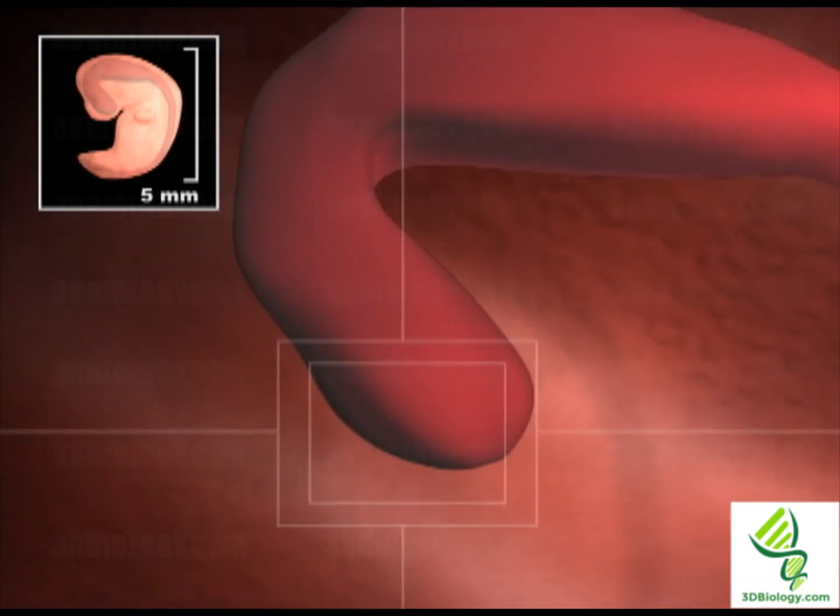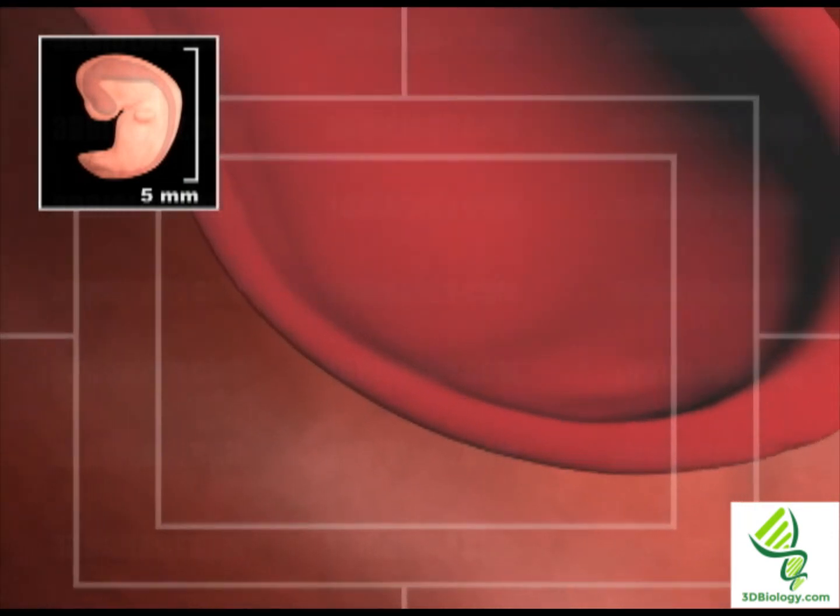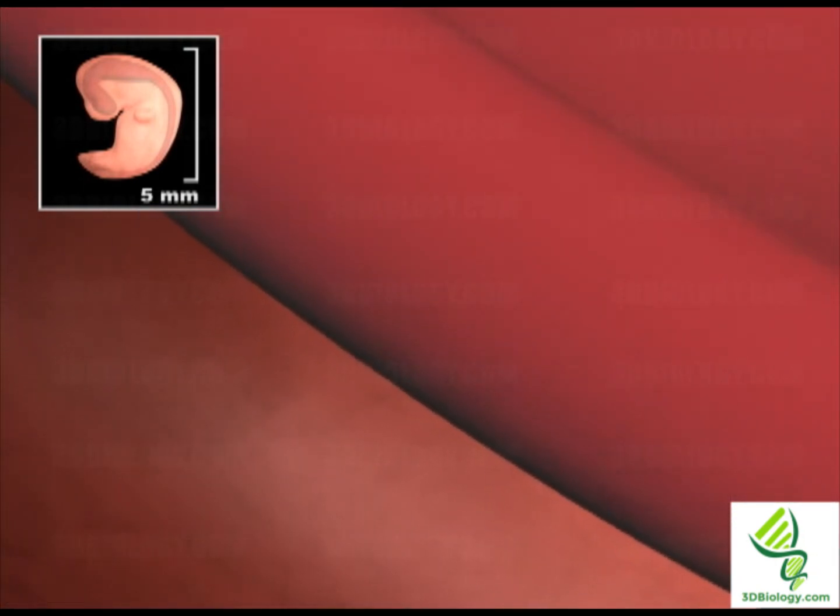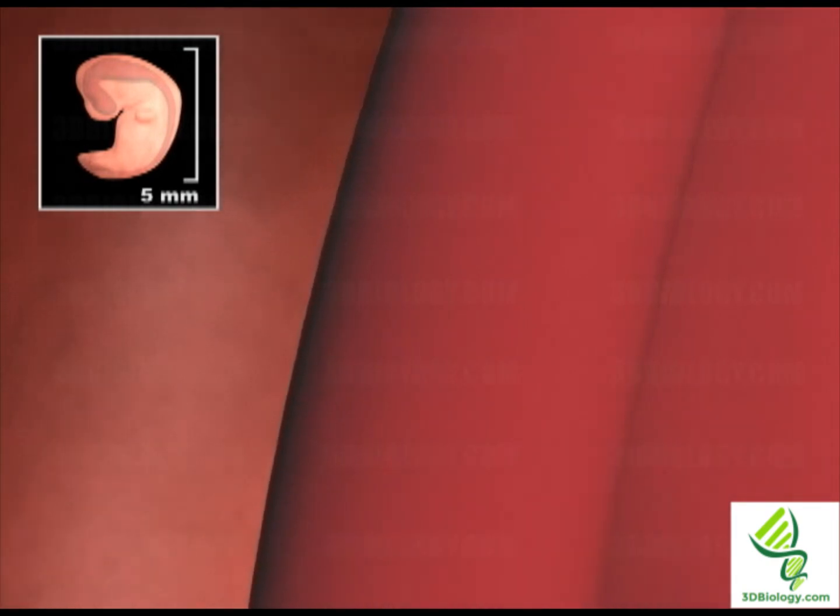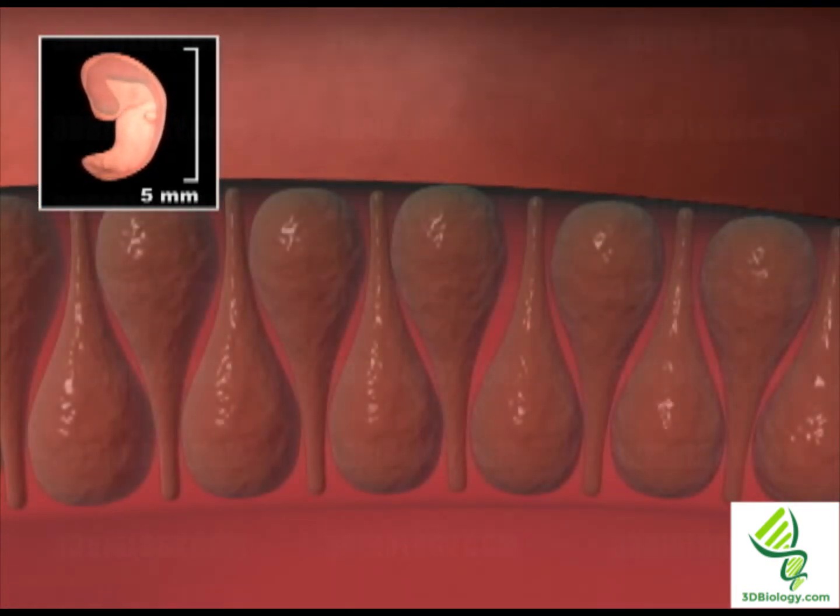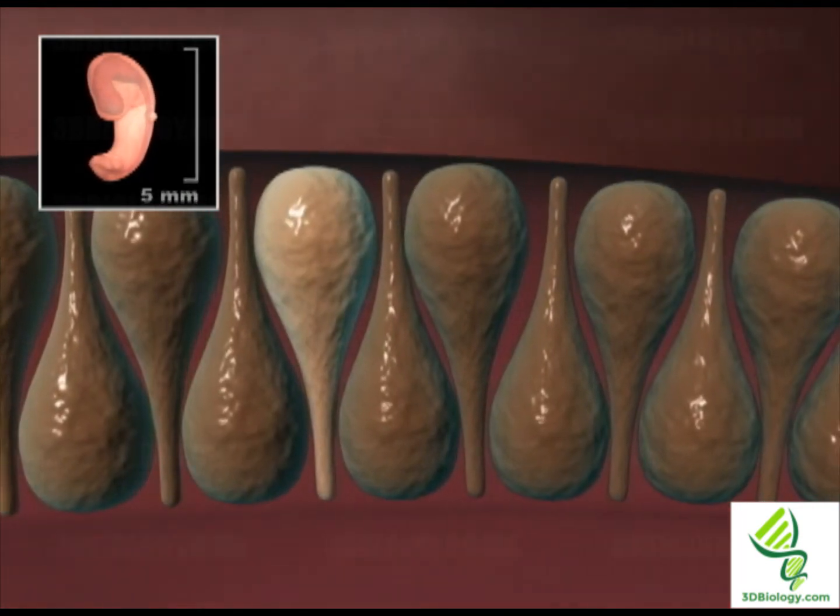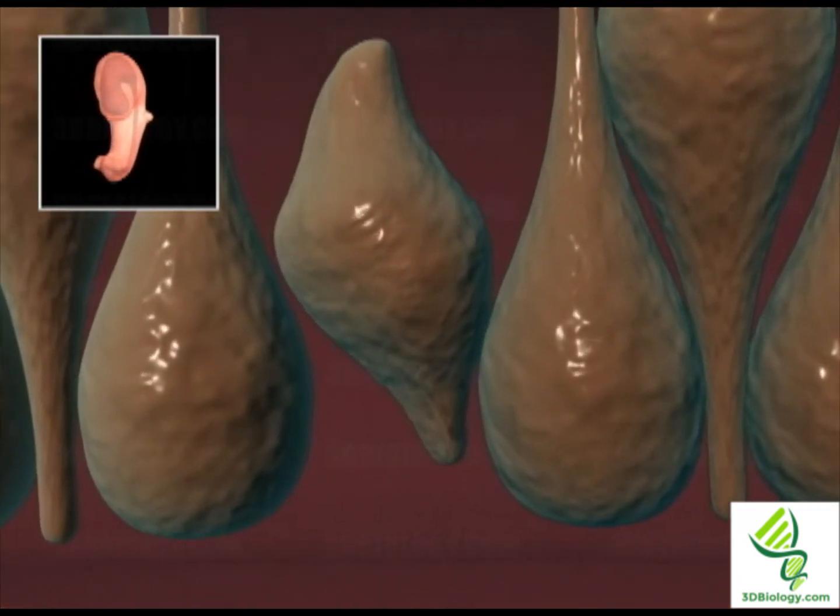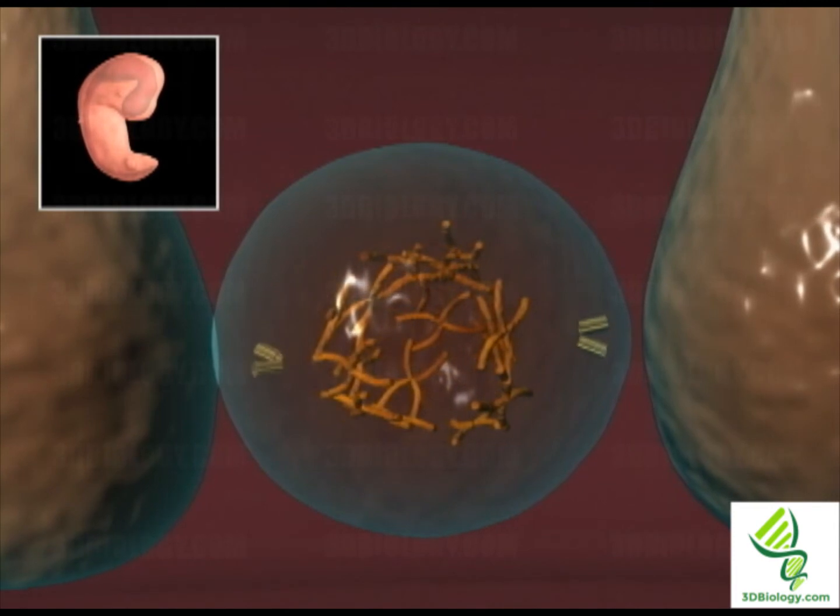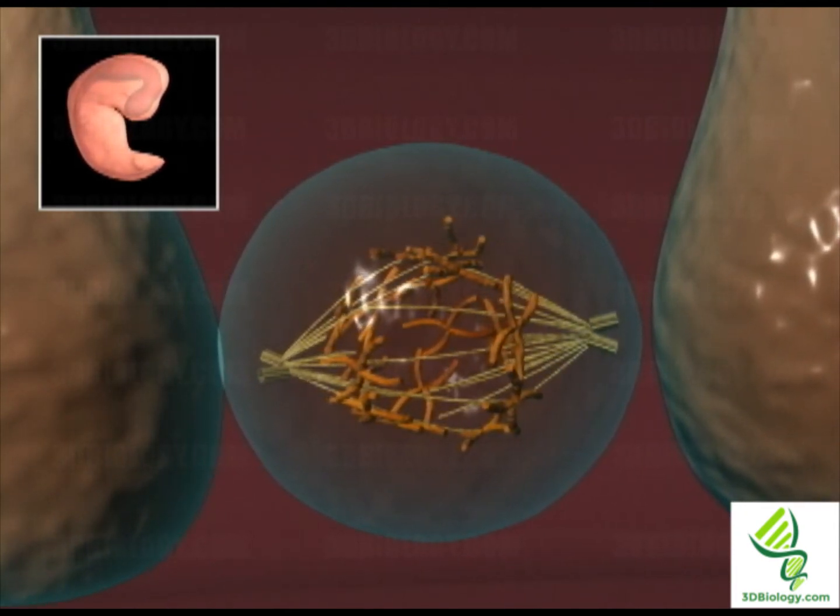The brain will form from the cerebral vesicle. The wall of the cerebral vesicle is built of columnar neuroepithelium. Divisions of these neuroepithelial cells will produce neuroprogenitor cells. They will generate neurons and glial cells of the brain cortex.